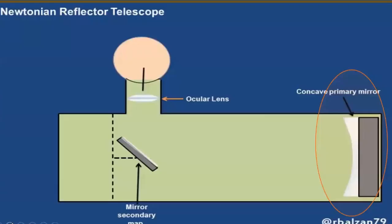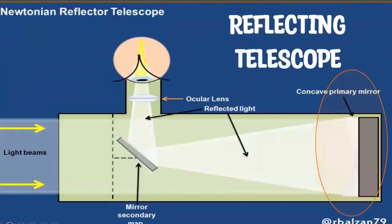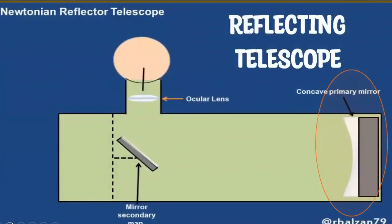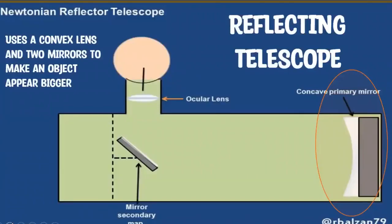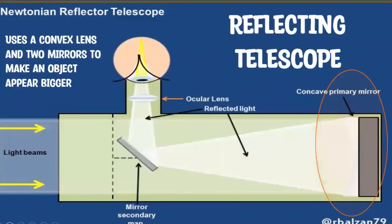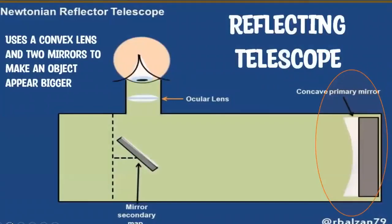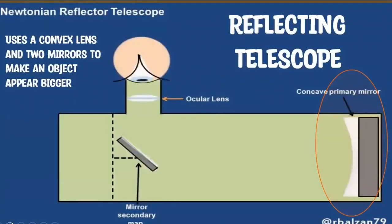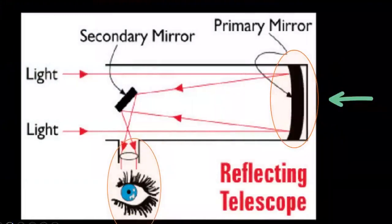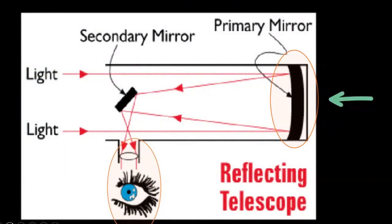Another type of telescope that uses mirrors as well as lenses is called a reflecting telescope. A reflecting telescope uses a convex lens and two mirrors to make an object appear bigger. Light is collected by the large concave mirror, and the parallel rays traveling toward the mirror are reflected and focused to a certain point. The secondary plane mirror is placed within the focal length of the primary concave mirror, which changes the direction of the light. A final eyepiece lens diverges the rays so that they are parallel when they reach your eye.